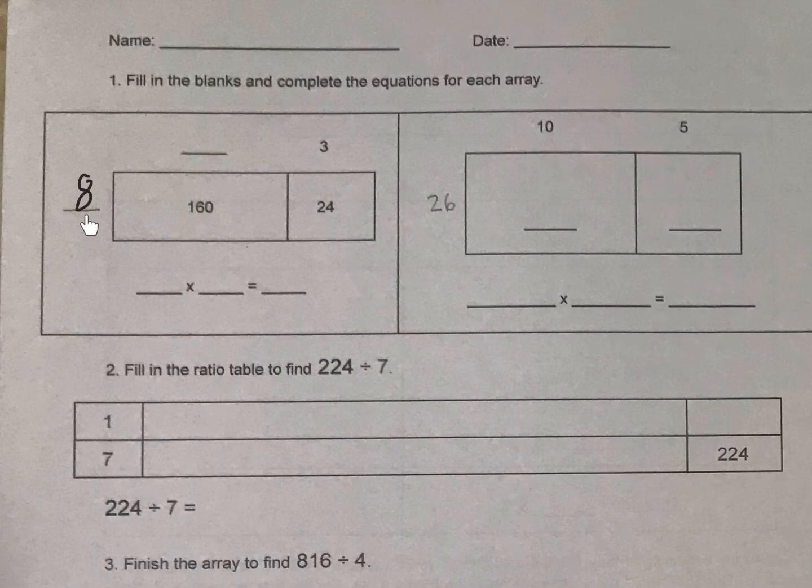And now to figure out this one, 8 times what equals 160? Just think about 8 times what is 16 to help you out there. And then you're going to have whatever is up here together times 8 equals whatever these two added together are.